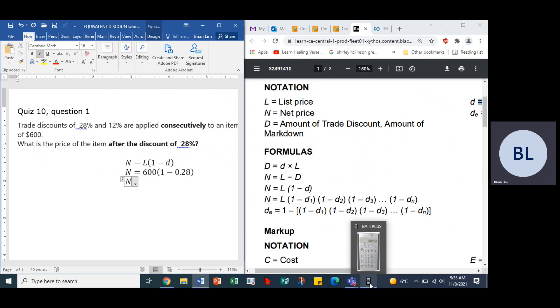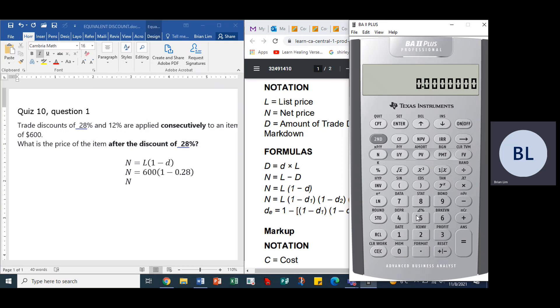Let's do the calculation. Let's get the calculator. We could do one minus 0.28, and that would give us 0.72. Then we multiply that by 600 and we get a price of $432. So N is equal to $432.00, and this is indeed the answer.